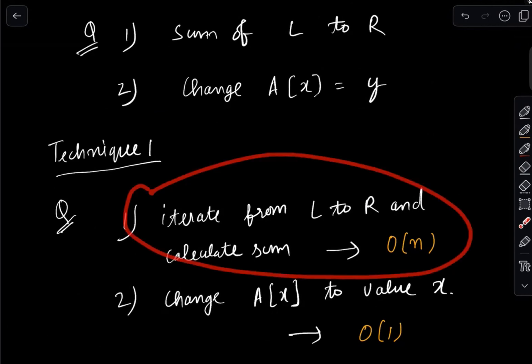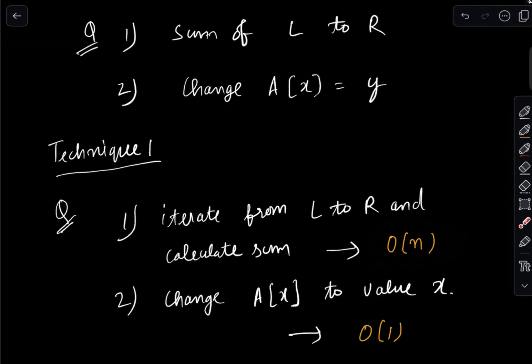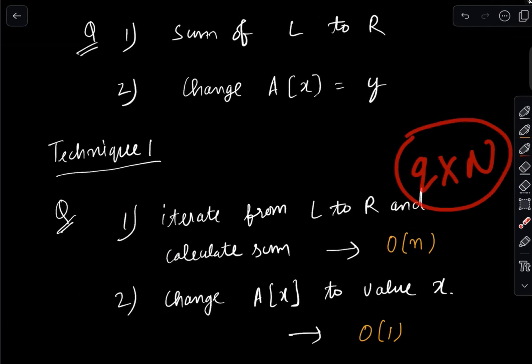This first operation seems to be taking a lot of time, so let's try to think of something else and reduce the time for the first operation. Our goal is to decrease it because O(n) is too long — if this query comes all the time then our complexity will be O(q*n) if q is the number of queries.